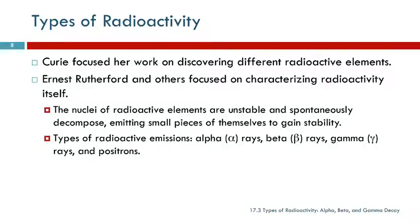Types of radioactivity. Four basic types: alpha rays, beta rays, gamma rays, and positrons.